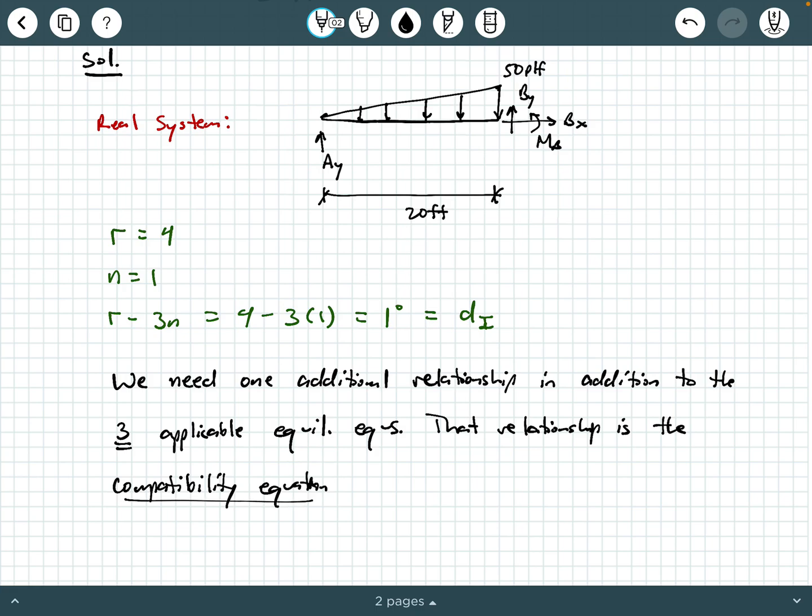Now that compatibility equation is going to be based on defining one of these external reactions as what we call the redundant. So it's called a redundant because you have one additional support reaction in addition to the three support reactions that you need to satisfy equilibrium and stability. So that extra reaction is redundant. It's in addition to what you really need for stability and equilibrium. So how do you choose a redundant? Well, if you watch the previous video, you choose a redundant that will give you what's called a primary system that is both statically determinate and stable.